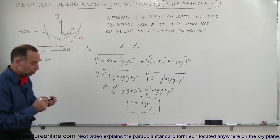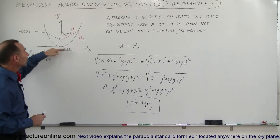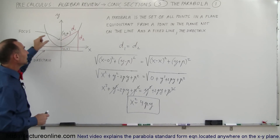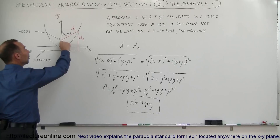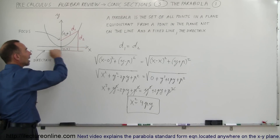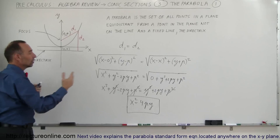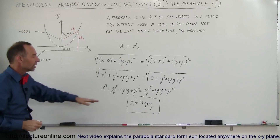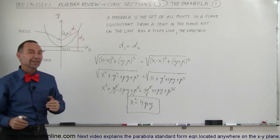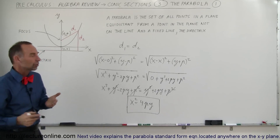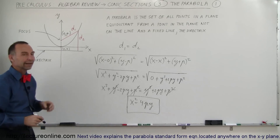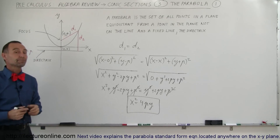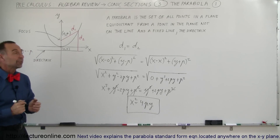This derivation used the definition that any point on the parabola must be equidistant from the fixed point — the focus — and the directrix. So x squared equals 4py is the general equation of a parabola with the vertex at the origin, and that's how we do that.